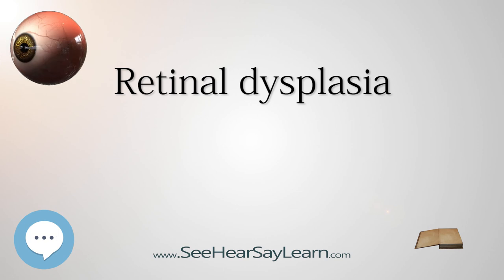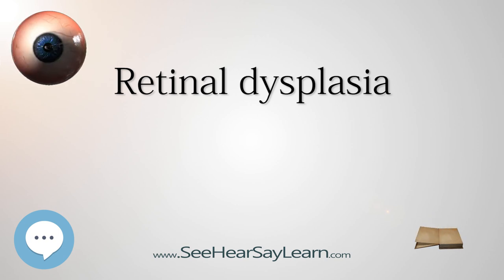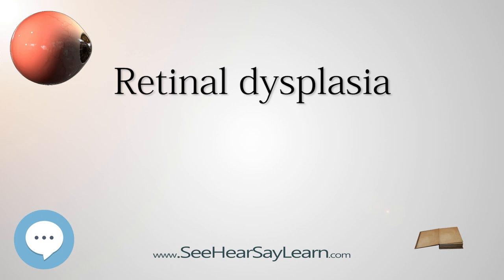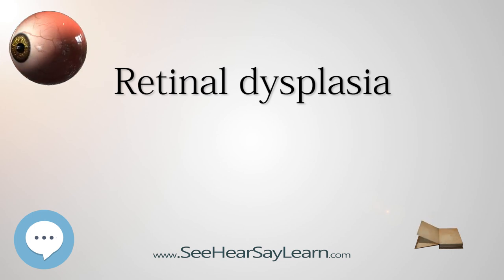Both forms in cattle often cause retinal detachment. In sheep, retinal dysplasia occurs by in utero infection with bluetongue disease. In horses, retinal dysplasia is bilateral, not inherited, and appears as multifocal or geographic disease, usually accompanied by other eye problems.